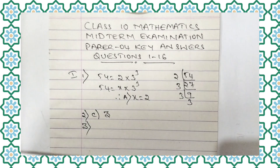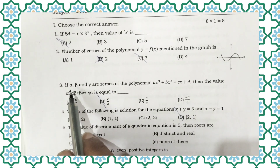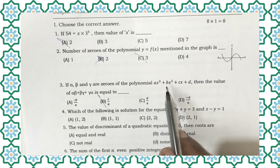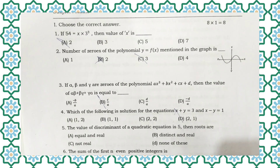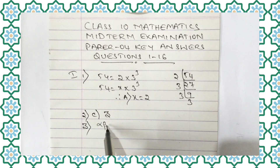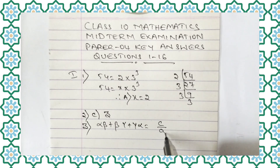Now let us move to question number 3. If alpha, beta and gamma are zeros of the polynomial ax³ plus bx² plus cx plus d, then the value of alpha·beta plus beta·gamma plus gamma·alpha. Using the relation between the zeros, the right option is option B: alpha·beta plus beta·gamma plus gamma·alpha is equal to c by a.